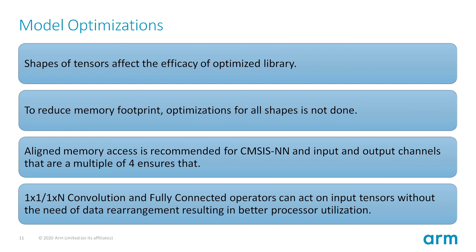Different shapes of tensors can affect the level of optimization. For example, shapes that lead to unaligned access can result in an increase in memory access time. Some shapes are inherently better than others, as optimization can be done without the need of special techniques like image-to-column transformations.